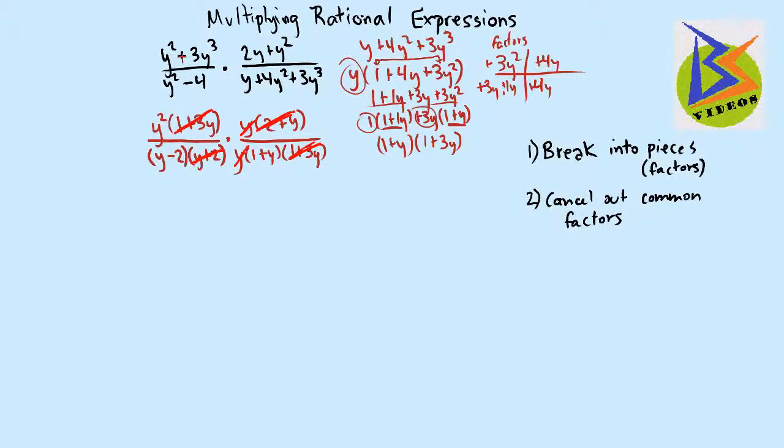And so on the top, these all turn to 1, by the way. y squared times 1 times 1 times 1 is just y squared. And on the bottom, the denominator, we have y minus 2 times 1 plus y.